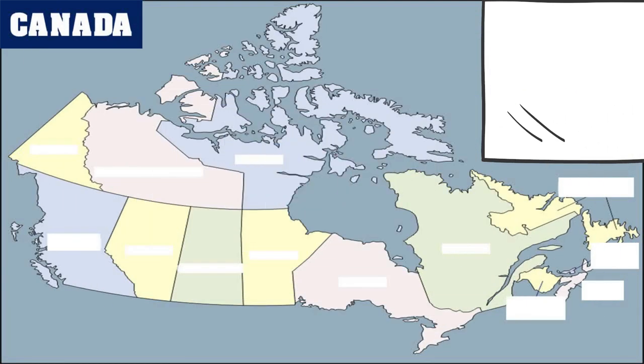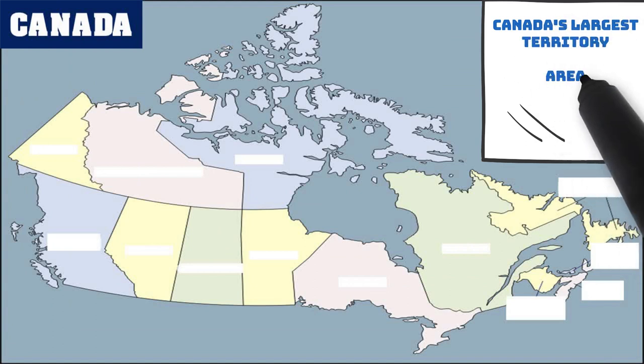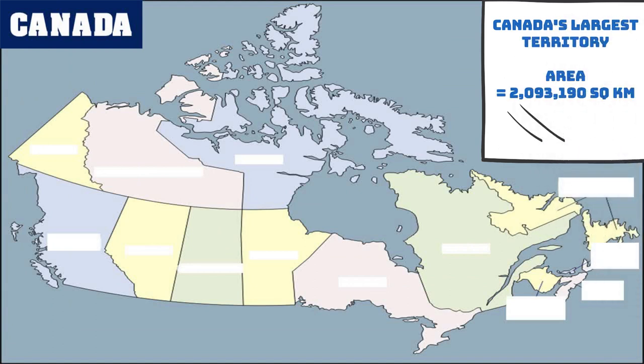Nunavut is Canada's largest territory, with a total area of 2,093,190 square kilometers. Nunavut is very big — if it were a country, it would be the 15th largest country in the world.